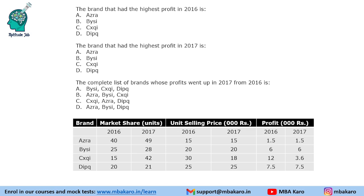We will use this table to answer the remaining questions. The next question asks: which brand had the highest profit in 2016? Finding values in terms of 1,000 rupees and multiplying market share in units by profit per unit: A has 60, B has 150, C has 15 × 12 = 180, and D has 150. So the highest profit is with C.